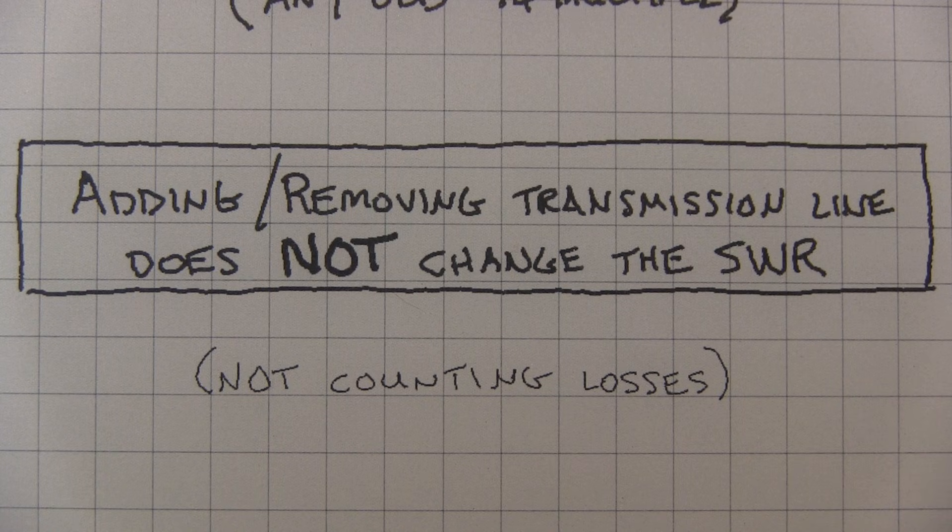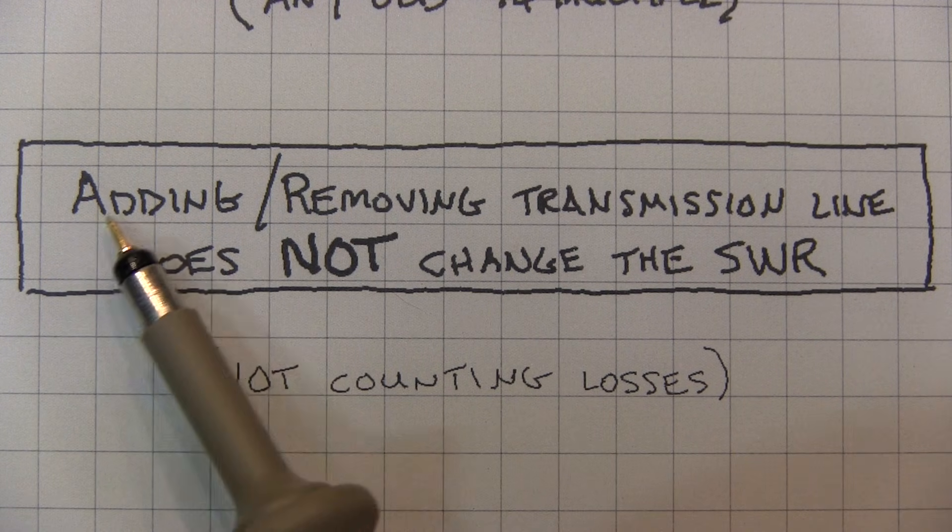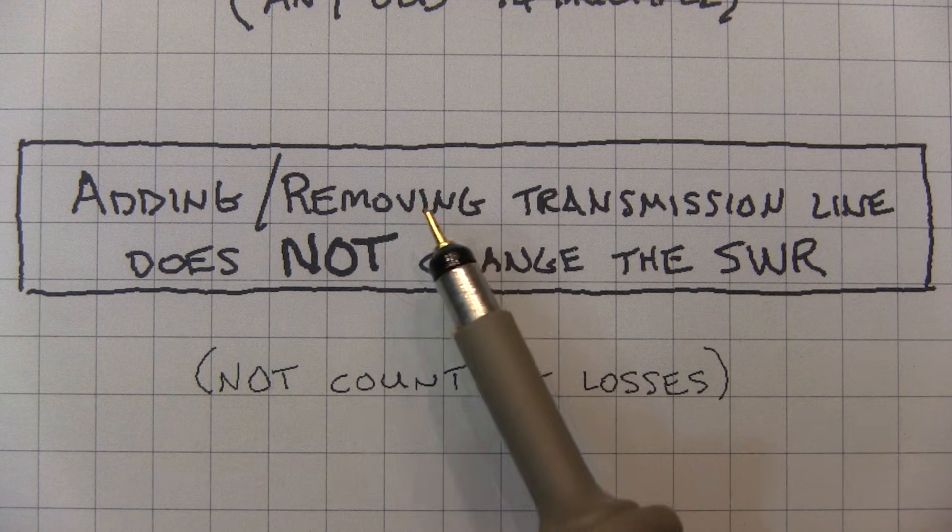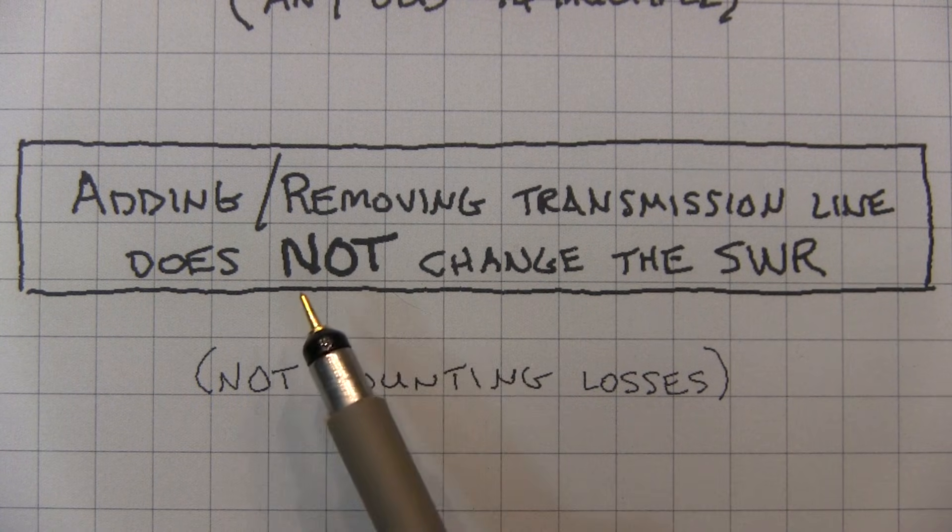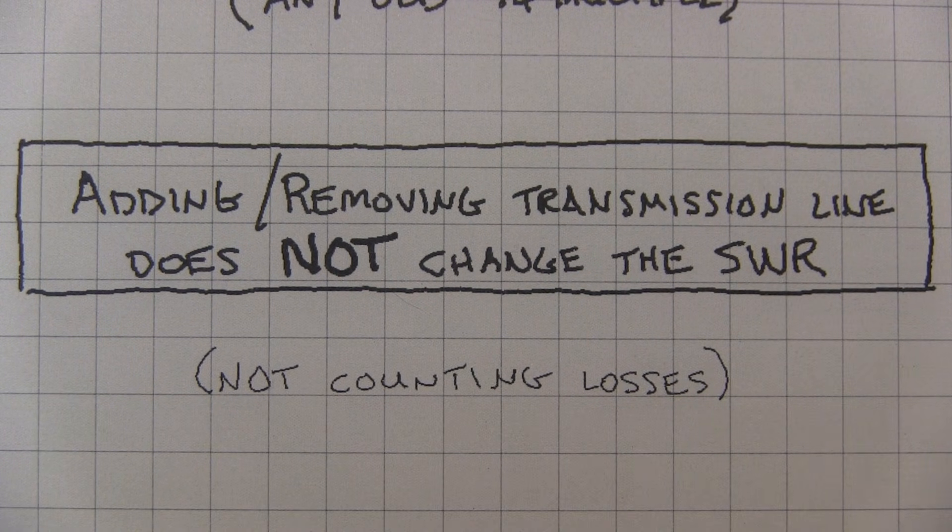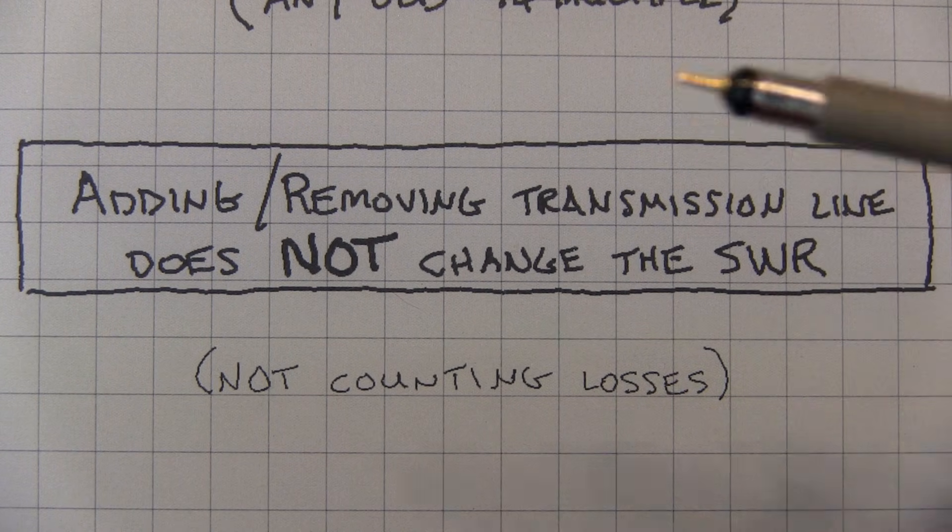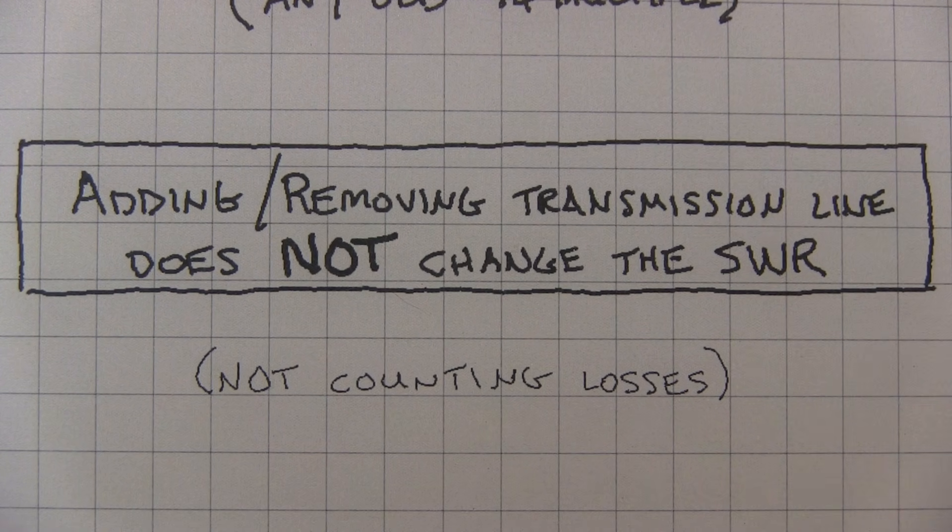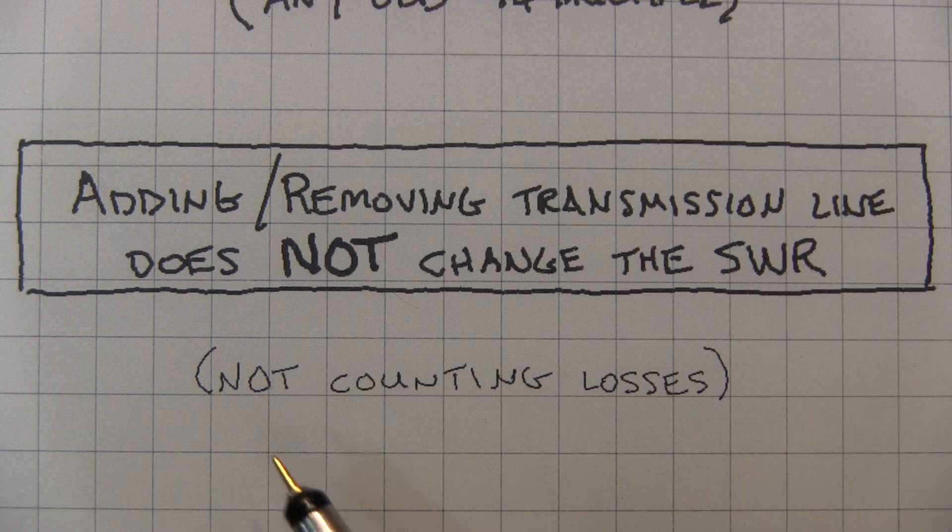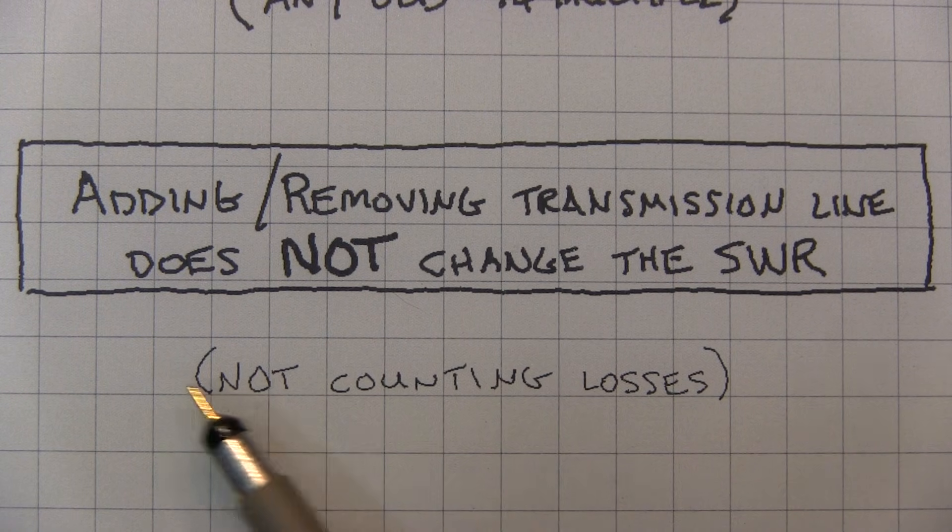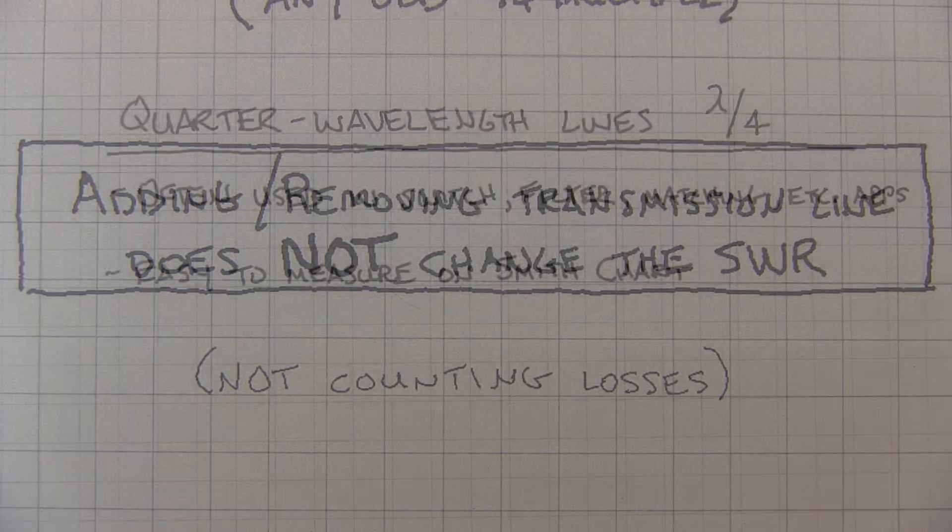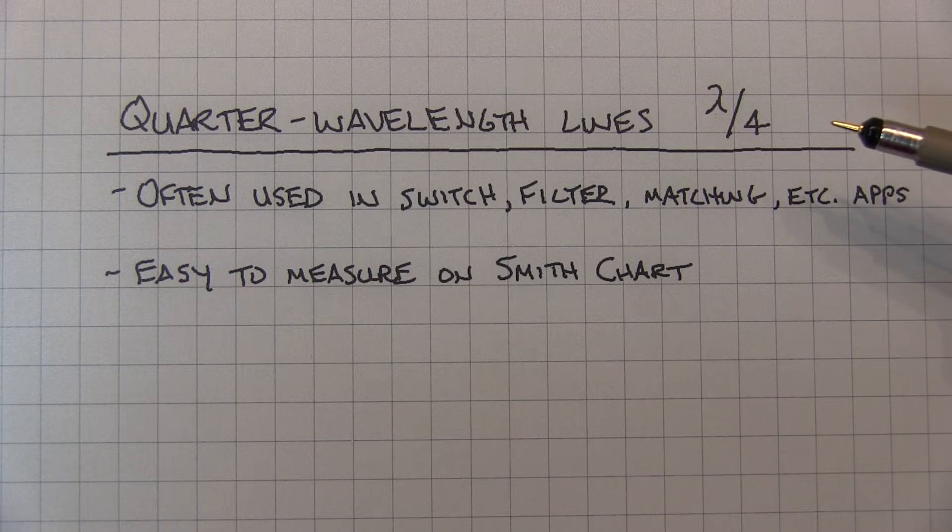Now this bears repeating because of a very common misconception. Adding or removing a transmission line or changing the transmission line length does not change the SWR on the line. It does change the impedance looking in the line, but does not change the SWR. And of course, this is not counting any losses that you might have in the line.